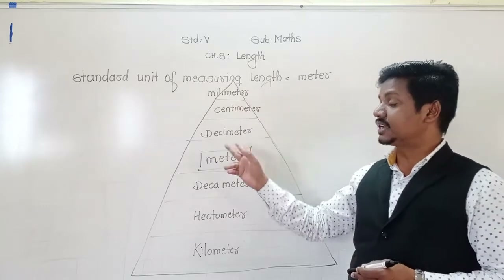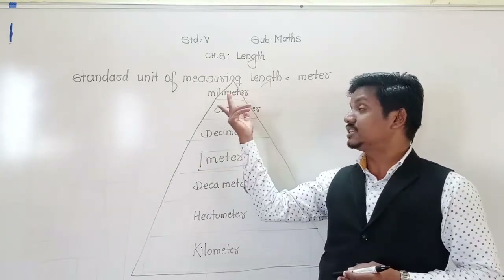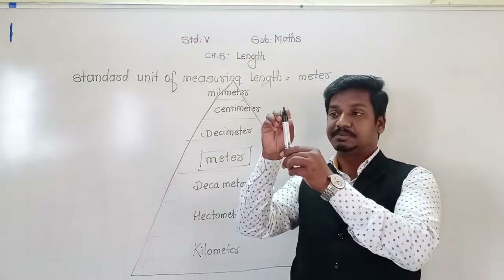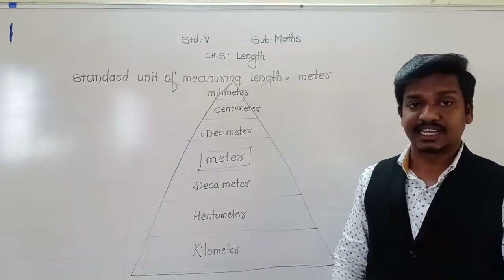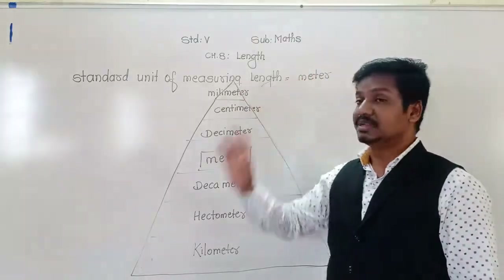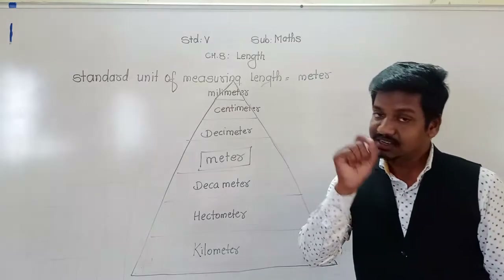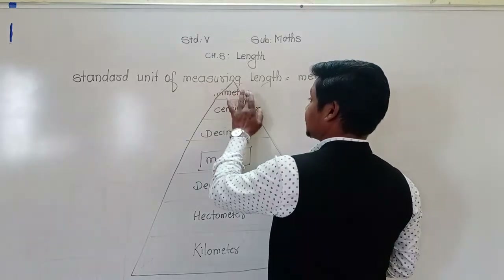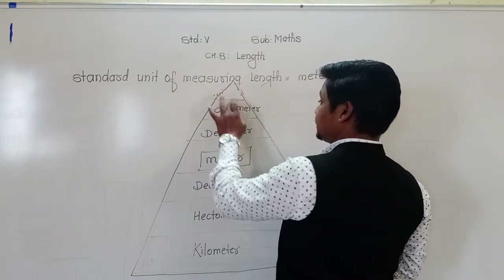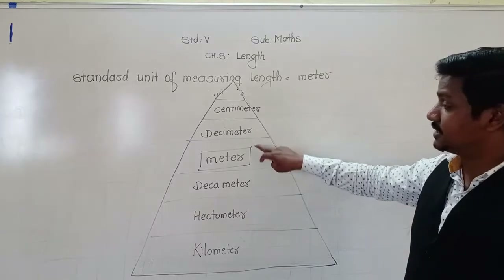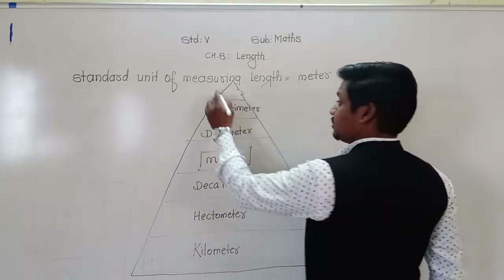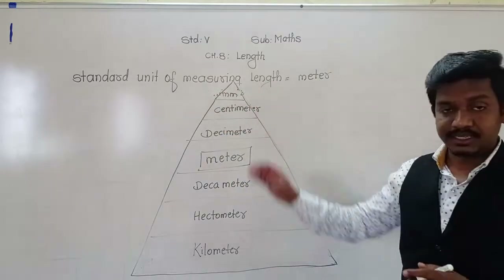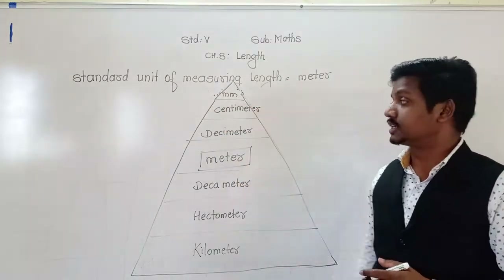You have measured length in centimetre and metre. We can also measure length in millimetre — for example, to measure the tip of a pencil, which is a very small length less than one centimetre. Questions will ask: how many millimetres make one centimetre? How many centimetres make one decimetre? How many decimetres make one metre? We will see that today.